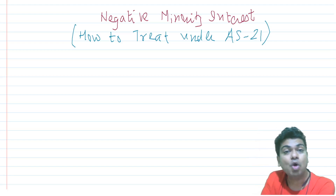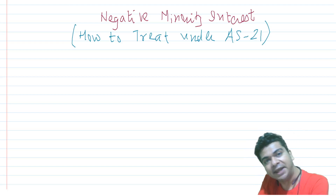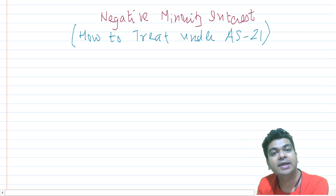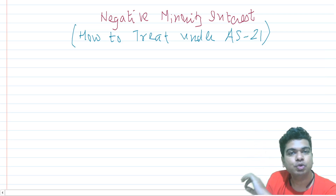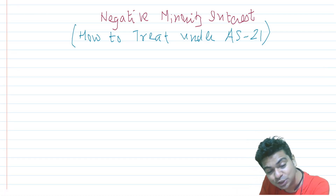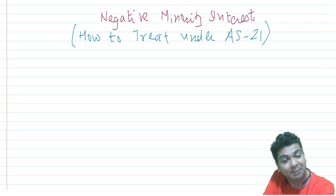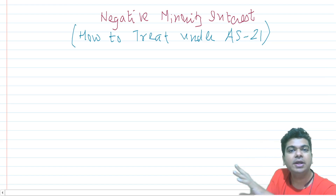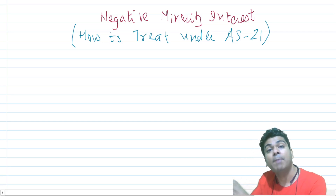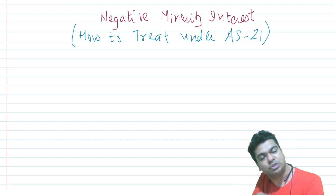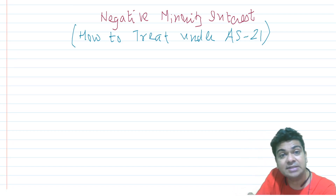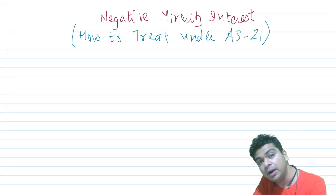What to do if the minority interest turns out to be negative? What will be the treatment under Accounting Standard 21 for negative minority interest? The very first question that arises is: how can minority interest ever become negative? Minority interest is the share in the net assets of the subsidiary that belongs to parties other than the parent. It is quite possible that the subsidiary may incur a huge loss, causing minority interest to become negative.